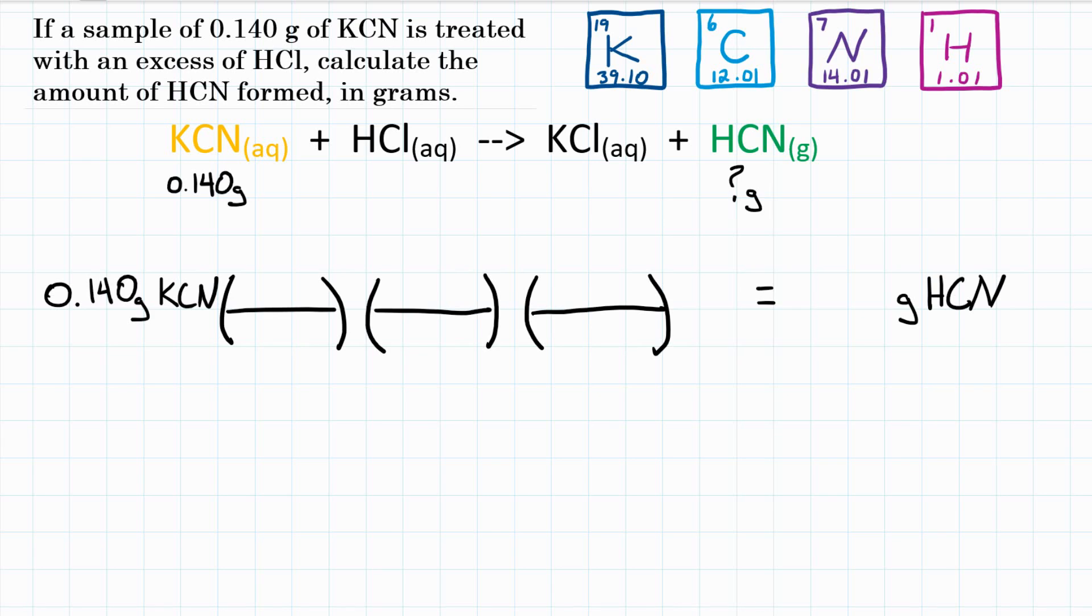First conversion factor, first step, we have to get rid of what we're starting with. We have to get rid of grams of KCN, and we want to turn that into moles of KCN. We can go grams to moles here. To convert between grams and moles, we need the molar mass. We need how many grams are in, specifically, one mole of KCN. And we're going to have to calculate the molar mass of KCN, because it's not just one element, it's multiple elements.